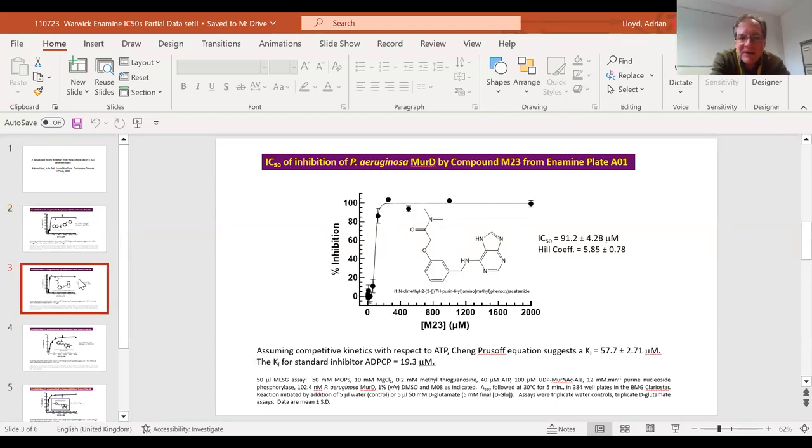Another sigmoid inhibitor, M23, with an IC50 of just under 100 micromolar.